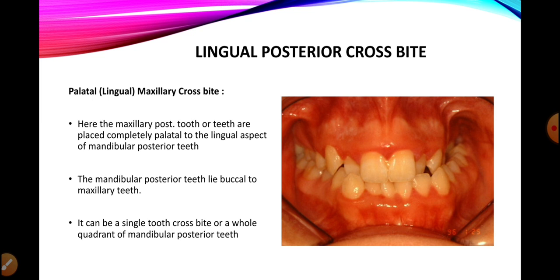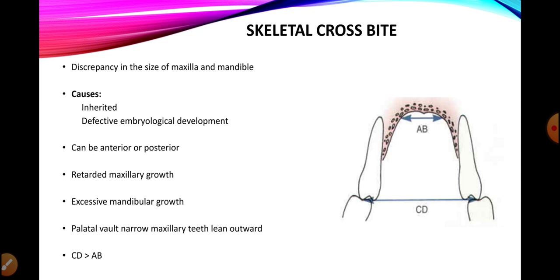In a lingual posterior crossbite, the mandibular posterior teeth lie buccal and the maxillary posterior teeth lie palatal. It can be a single tooth crossbite or involve a complete segment of teeth. To summarize: we have discussed anterior crossbite, posterior crossbite, and the various classifications of posterior crossbite — single and segmental by number, unilateral and bilateral by side, and lingual and buccal crossbites by reference arch.